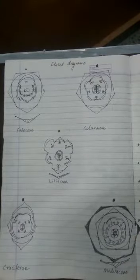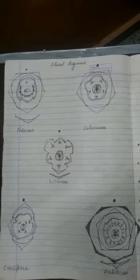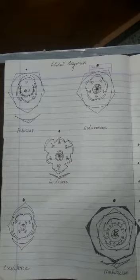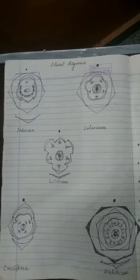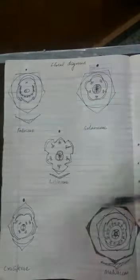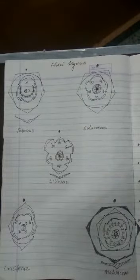Now let's move to the next topic: floral diagrams. The floral formula does not give every piece of information clearly — for example, it does not tell you the aestivation or the placentation. When we draw the floral diagram, it helps us understand placentation as well as which side is the anterior side and which is the posterior side, because the mother axis is always shown in the floral diagram.